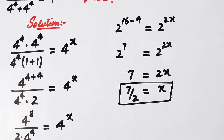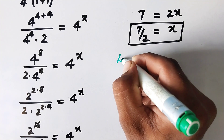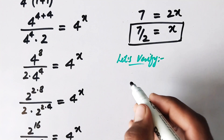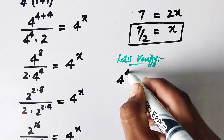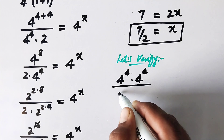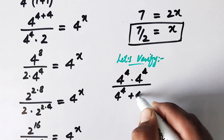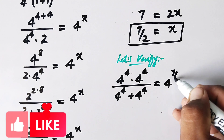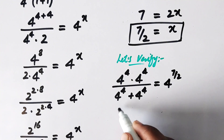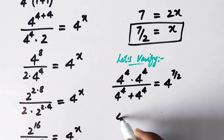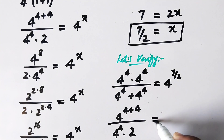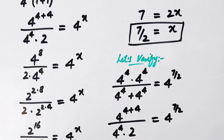Now let's verify our answer. We take our original equation: 4 to the power 4 times 4 to the power 4, divided by 4 to the power 4 plus 4 to the power 4, equal to 4 to the power x, where x is 7 over 2. The denominator simplifies to 4 to the power 4 times 2, giving 4 to the power 8 divided by 4 to the power 4 times 2, equal to 4 to the power 7 over 2.